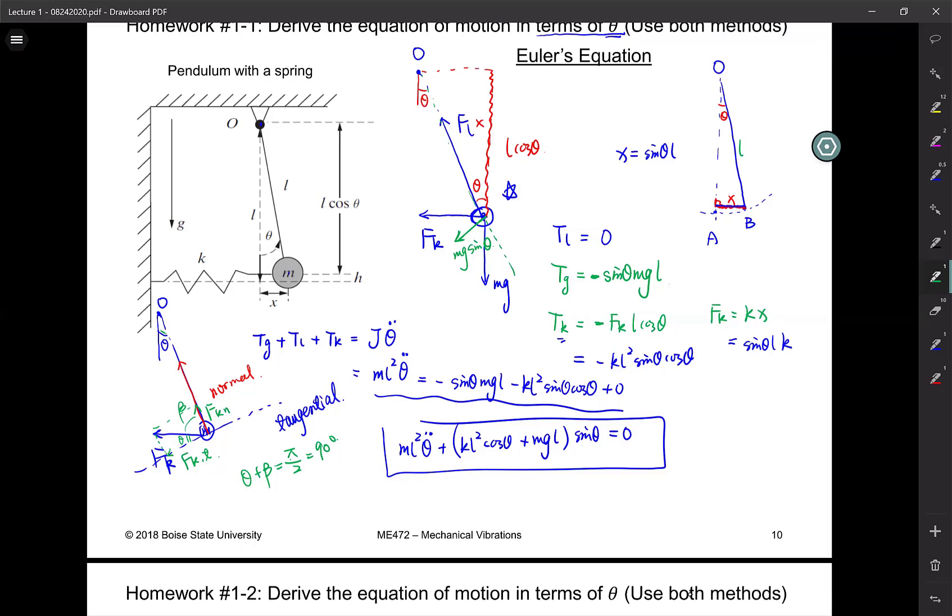All right, so that's why your FK is cosine theta FK, and then in this case, the length of the arm is the length of the line, so it's L, okay?